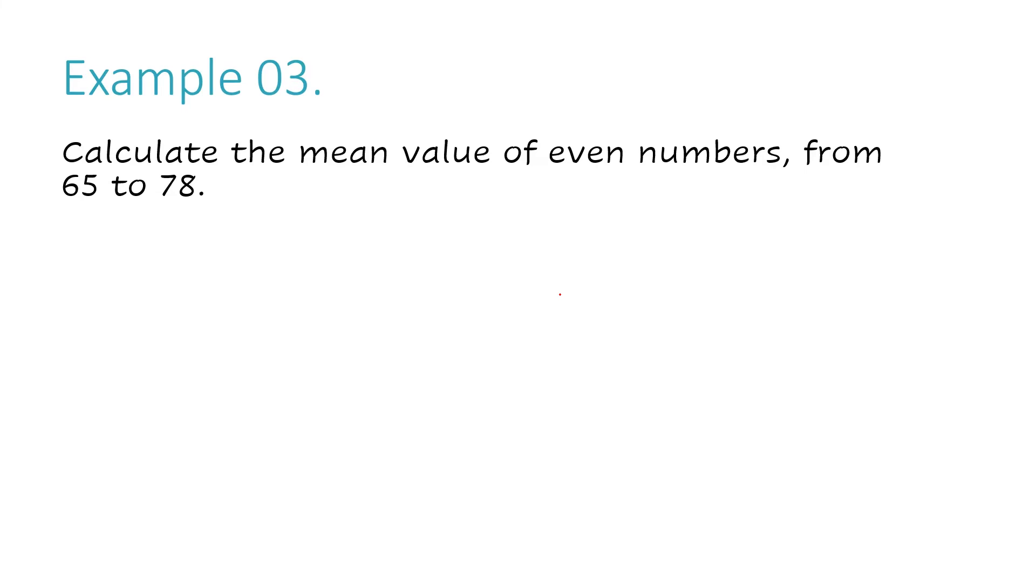Example number three, calculate the mean value of even numbers from 65 to 78. Well this one's a little more complicated because they didn't just give us our data set. So they want us to find the even numbers. So we're not going to use 65. We're going to use the next number after 65, which is 66, 66 plus 68. We got to skip 67 because 67 would be odd, right?